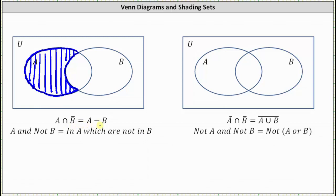For the second example we have A complement intersect B complement, which is equivalent to the complement of A union B. A complement intersect B complement is the set of elements that are not in A and not in B. The complement of A union B is the set of elements not in A or B.